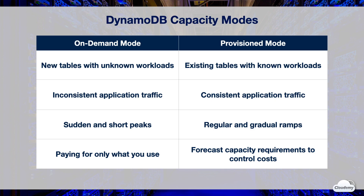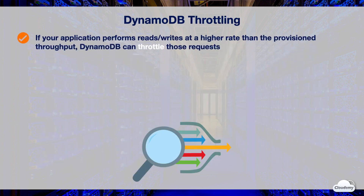Provisioned mode is suited when you work with existing tables with known workloads. You can predict application traffic based on historical consumed capacity and CloudWatch metrics. Provisioned mode is also good for applications with consistent traffic and regular traffic peaks that happen gradually. It can help you forecast capacity requirements for cost control. Provisioned throughput is the maximum amount of capacity that an application can consume from a table or index.